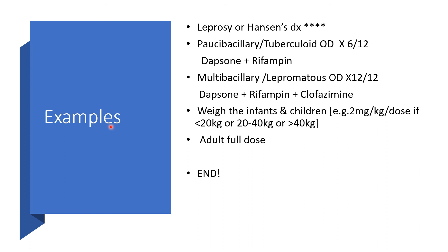Finally, for leprosy — otherwise known as Hansen's disease — if dealing with paucibacillary (tuberculoid) leprosy, use Dapsone once daily for 6 months combined with rifampicin. For multibacillary (lepromatous) leprosy, use Dapsone once daily for 12 months combined with rifampicin and clofazimine. We must weigh infants and children before administering medication, while adults receive the full adult dose.